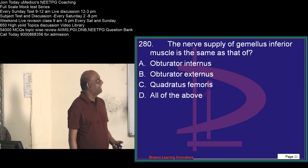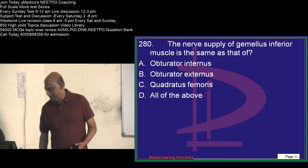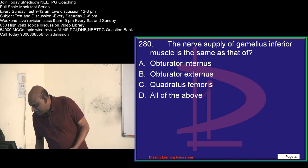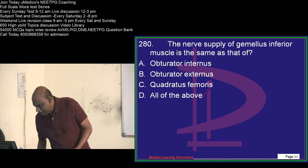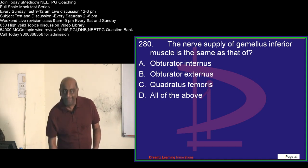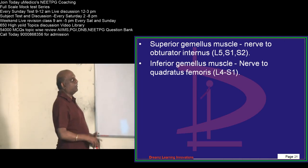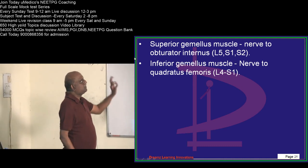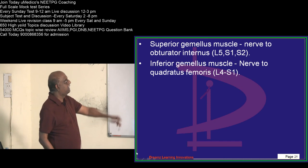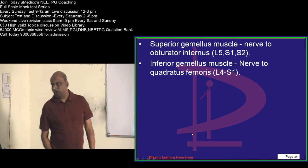Give a great answer for this simple question. Gemellus inferior muscle — what is your answer? Vishal says obturator internus. Manish Ranjan says quadratus femoris. Quasi Shanbhas also says quadratus femoris. Satyam also says quadratus femoris. The nerve to quadratus femoris — don't forget, it is a favorite question of the examiner. Superior gemellus muscle: nerve to obturator internus. Inferior gemellus: nerve to quadratus femoris.